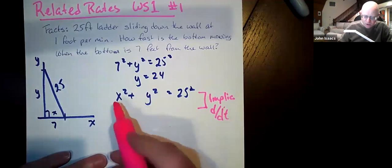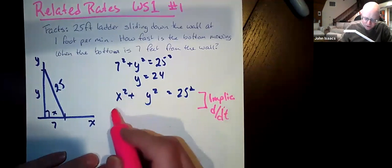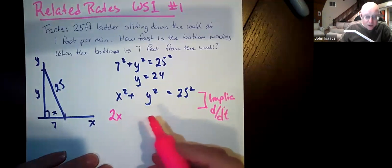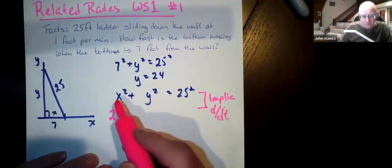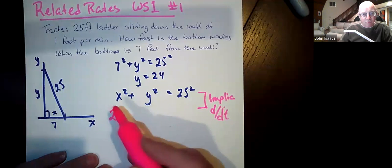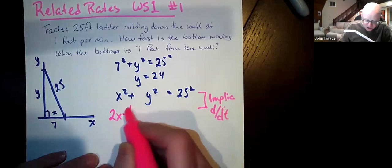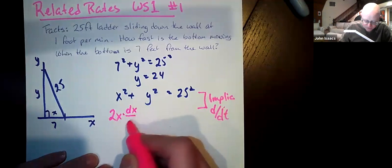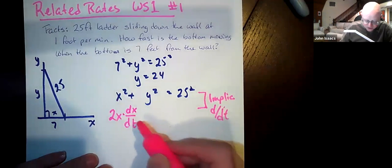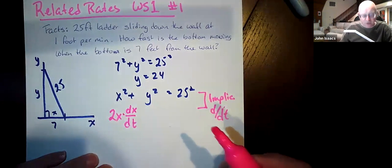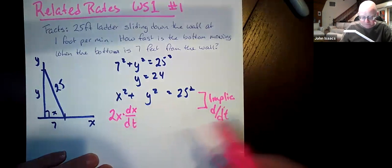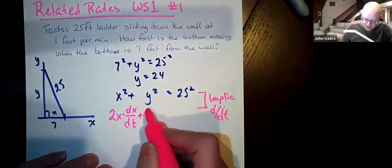So we're going to take the derivative of x squared. That's 2x. But we're not taking x with respect to x. We're taking x with respect to t. So we have to use the chain rule and multiply that by the derivative of the inside function, which is x. So the derivative of the inside function, x, is dx/dt.